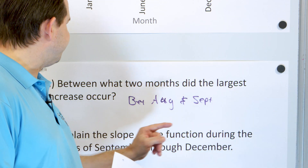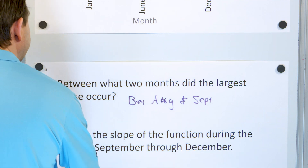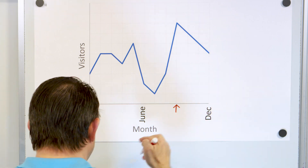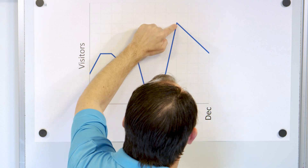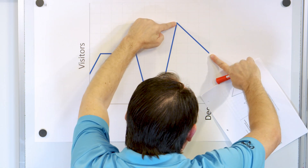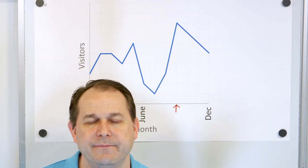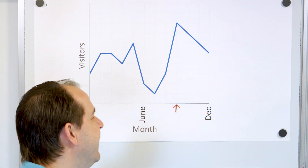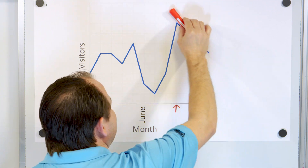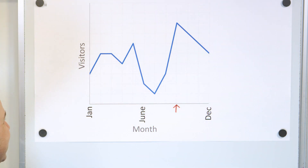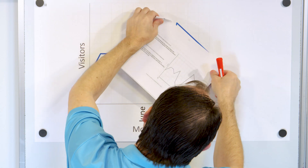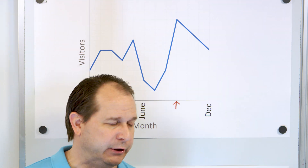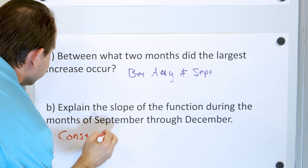Part B: explain the slope of the function during the months September through December. So September is right here, and then October, November, and finally December at the end of the year. The question says explain the slope. If we go up here to this point in September and compare all the way through December, the slope here is slanted downward — so it's a negative slope. And you can hold a straight edge to it and see it doesn't change at all. The slope doesn't change. So it's a constant slope over those months, and it's also a negative slope — a constant negative slope.